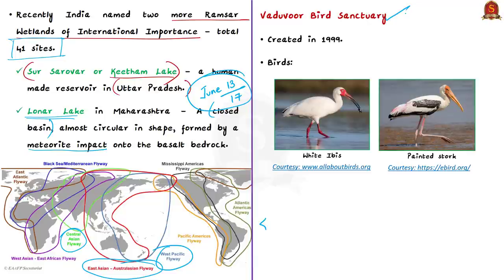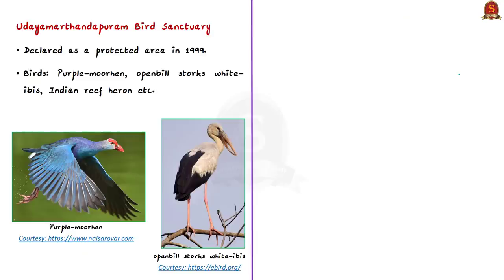Vadavur Bird Sanctuary was created in the year 1999. It attracts more than 40 species of water birds like white ibis, painted stork, and grey pelican. Udaya Marthandam Bird Sanctuary was also declared as a protected area in the same year, 1999. It attracts birds like purple moorhen, open-billed stork, white ibis, and Indian reef heron. From the Prelims perspective, it is important to know about these bird sanctuaries.